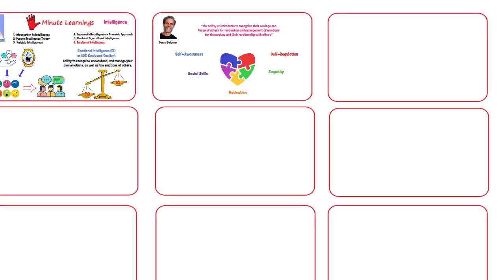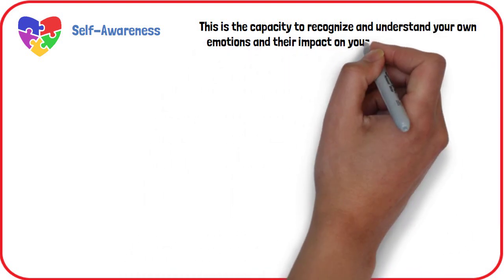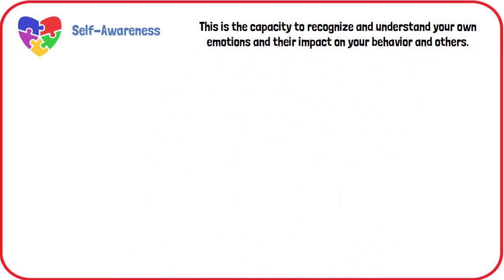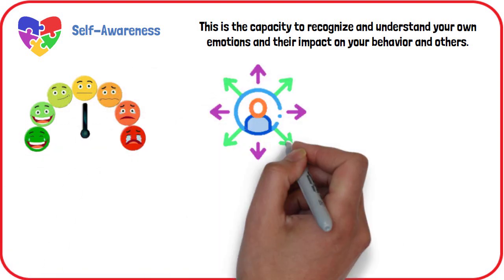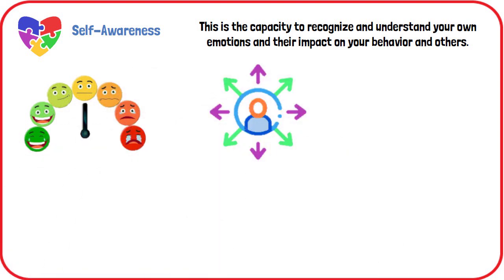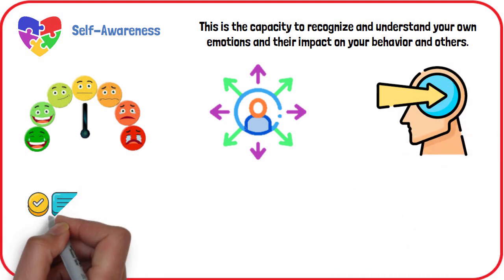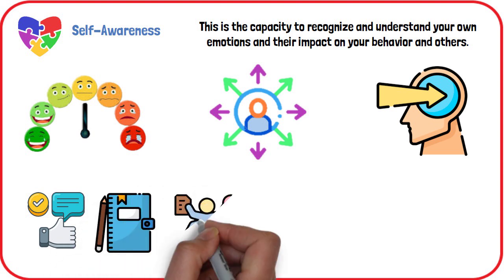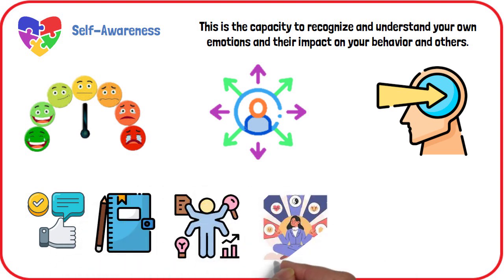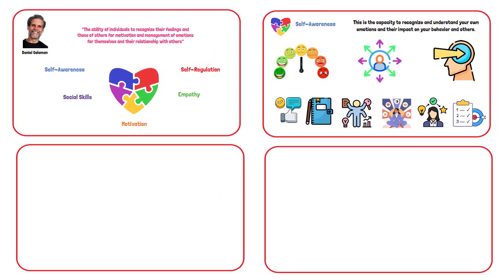Self-Awareness is the capacity to recognize and understand your own emotions and their impact on your behavior and others. Being self-aware means you can accurately identify your emotions, understand how they influence your actions, and recognize how others perceive you. To enhance self-awareness: seek constructive feedback, keep a journal, learn new skills, meditate and practice mindfulness, and reflect on your experiences and set personal goals.